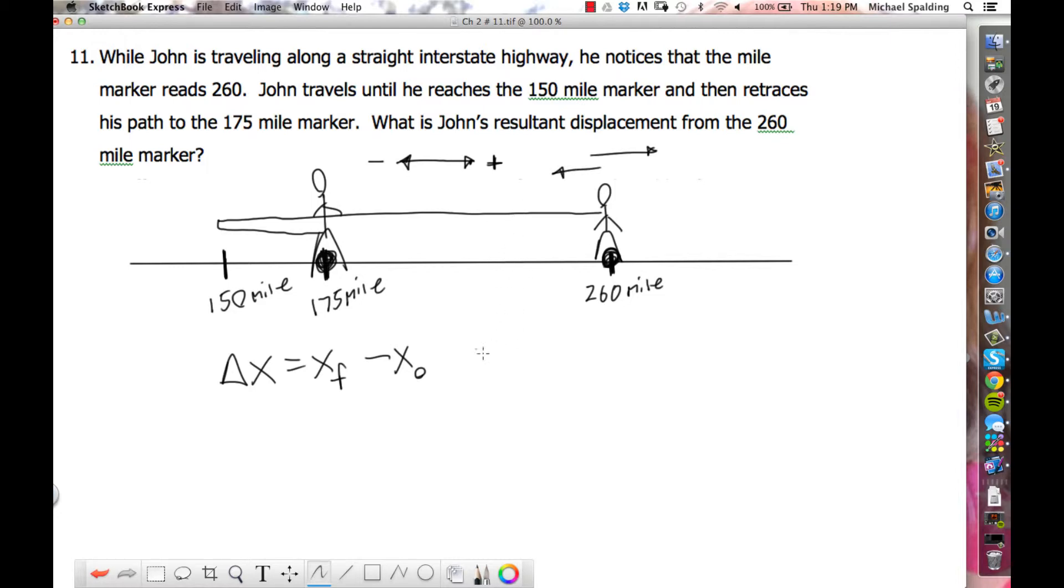The answer should come out negative. If you plug into this equation, change is always final minus initial. Where's his final position for this journey? 175 miles. And then what was his initial? 260 miles.